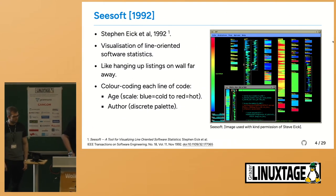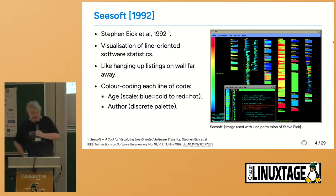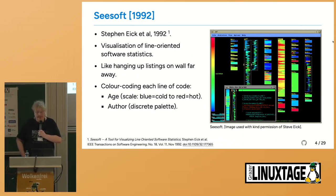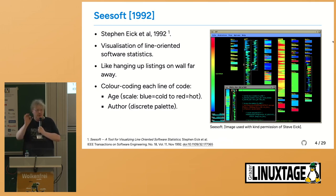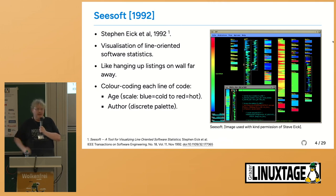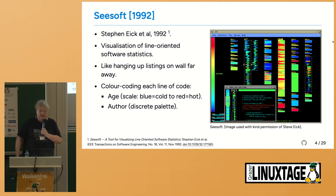The first software repository visualization I'm aware of was CSoft back in 1992, from Steve Ike and his group at AT&T. Back then, they had a source code version management system called eCMS. They were able to store per line of code various metrics — last timestamp of modification, who modified it, that kind of statistic. They came up with a front end to visualize those statistics called CSoft, a bit like hanging up listings on a wall far away, was their metaphor.